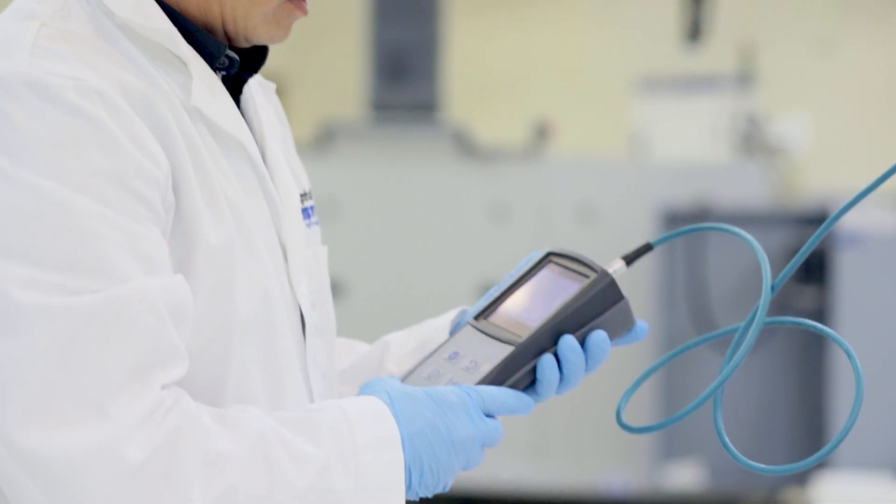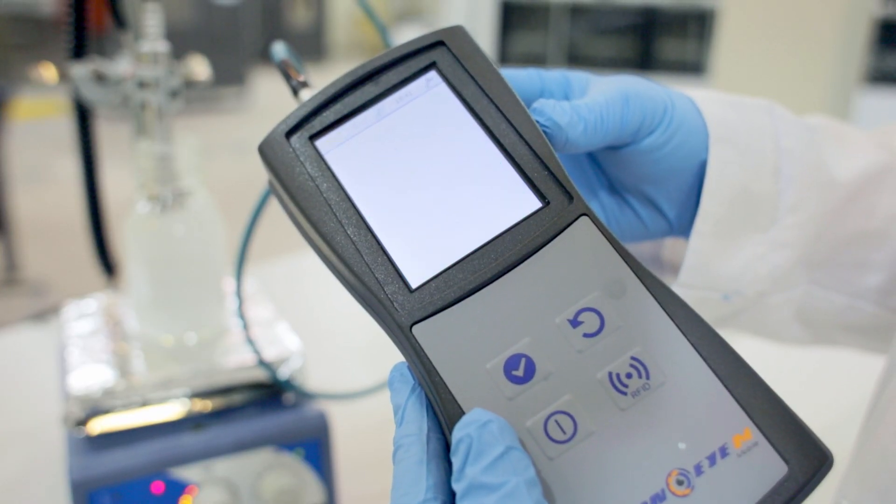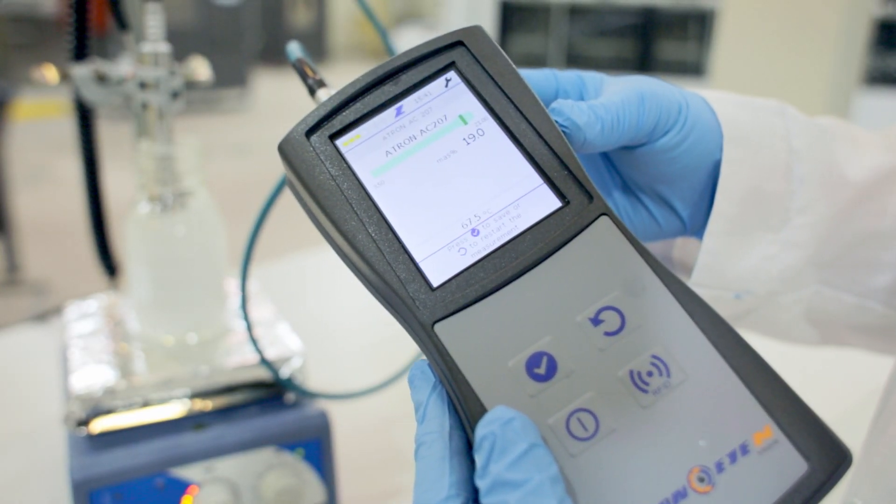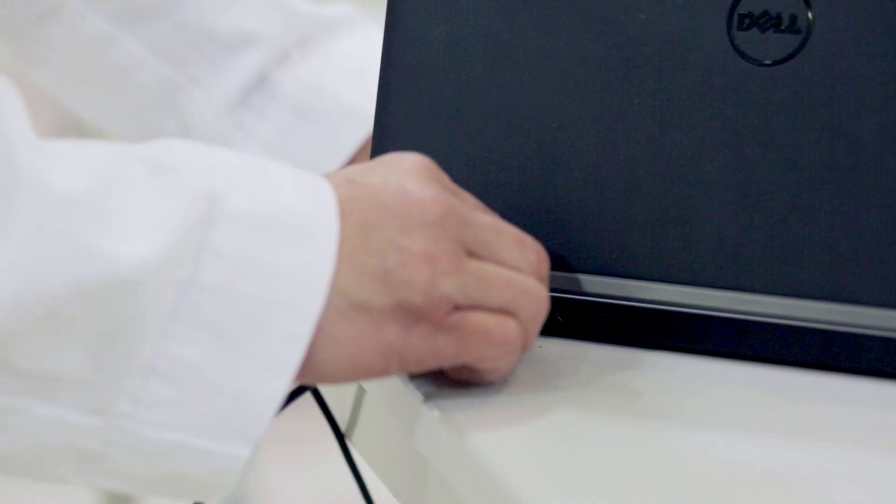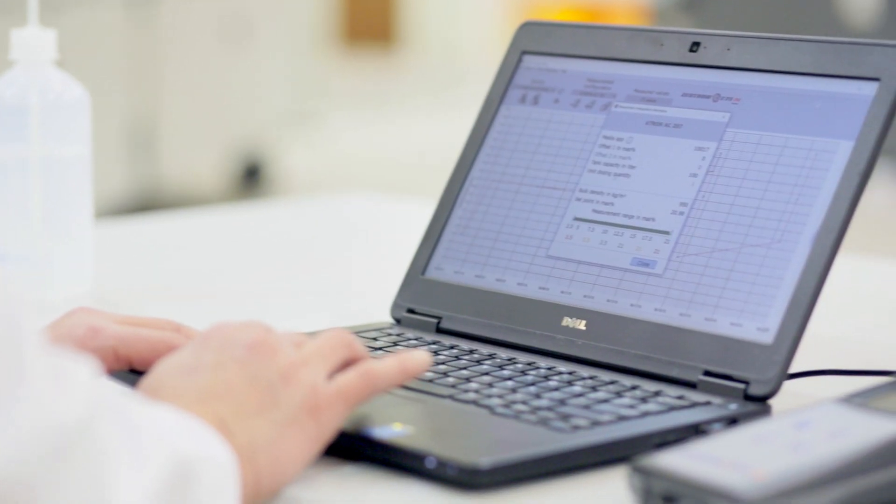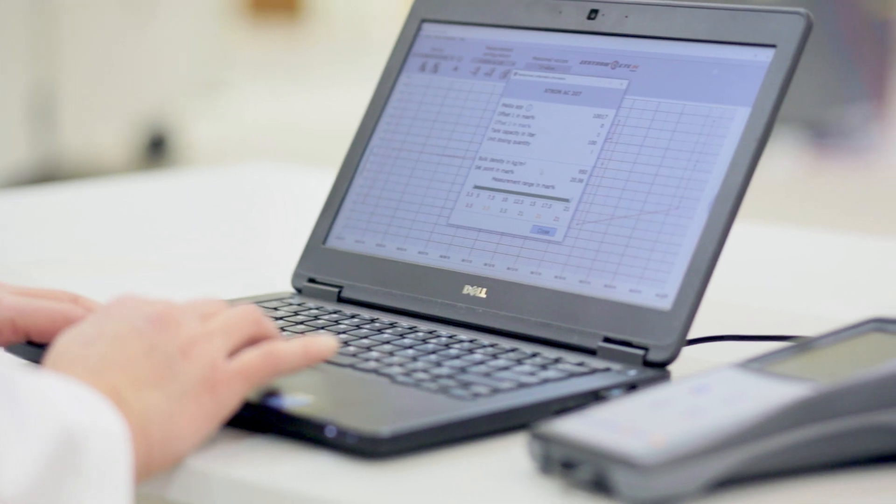To ensure traceability and meet documentation requirements, the Zestron i-Mobile saves all measurement values by exporting via a USB interface.